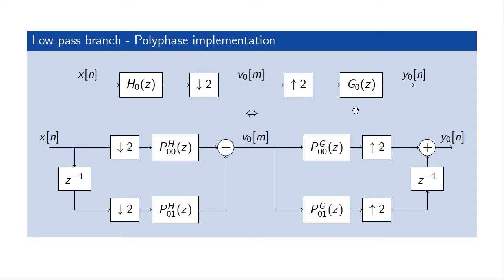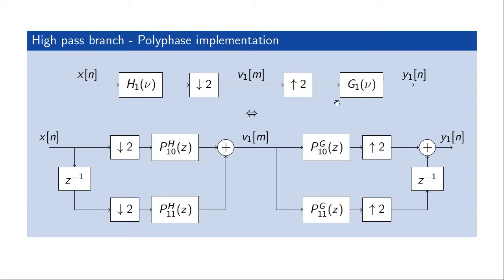The same thing can be done for the high-pass branch, splitting filters H1 and G1 using polyphase implementations. The benefit is that this reduces the number of multiplications carried out per unit time by a factor of two, since we have upsampling and downsampling by a factor of two in both cases, so the overall number of multiplications is reduced by a factor of two.